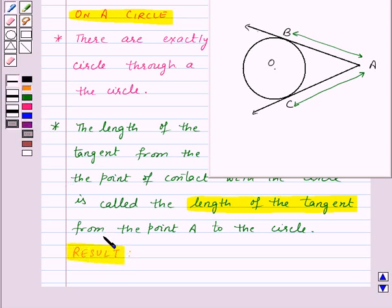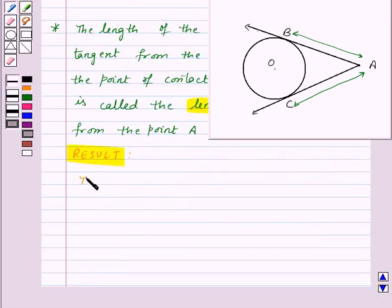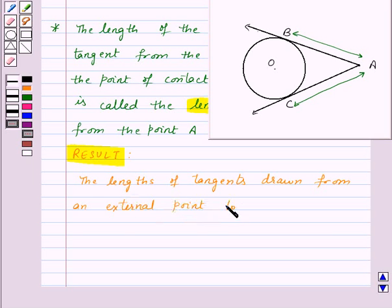which says: the length of tangents drawn from an external point to a circle are equal.